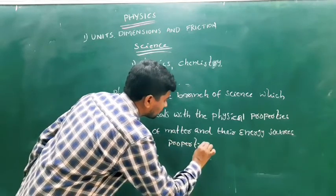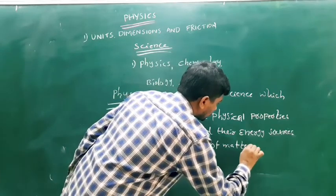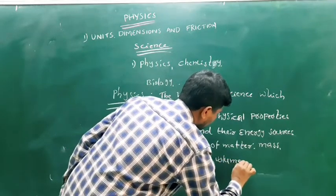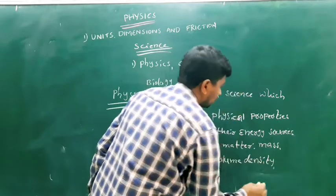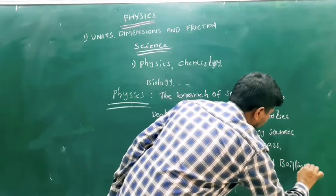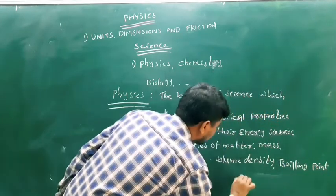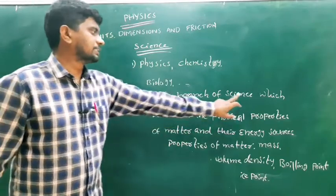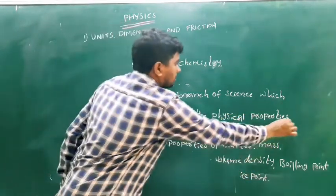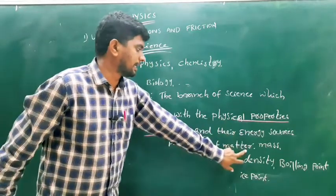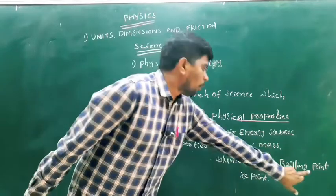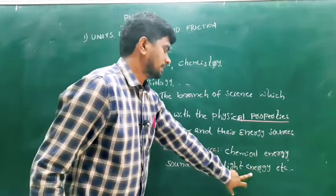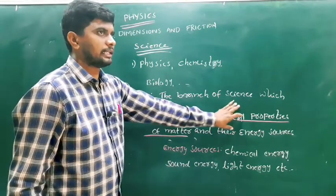What are the properties of matter? Examples of properties of matter include mass, volume, density, boiling point, and ice point. Energy sources include chemical energy, sound energy, and light energy. Physics deals with the physical properties of matter and their energies.